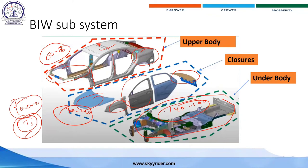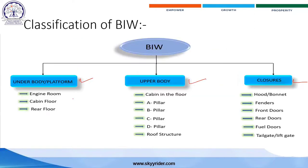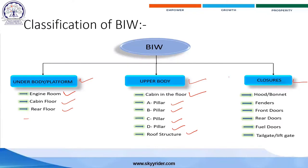In the underbody or platform body, you have engine rooms, cabin floors, rear floors, and middle floors as major room types. In the upper body — the visible area — you have the cabin floor, A pillar, B pillar, C pillar, D pillars, and roof structure. Closures are parts that can be opened and closed frequently.